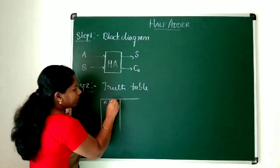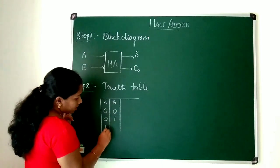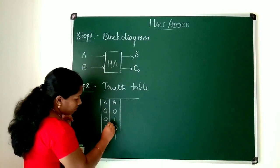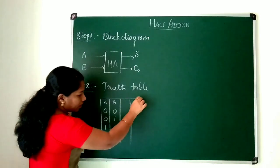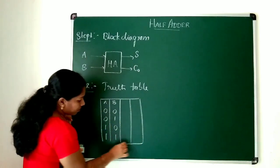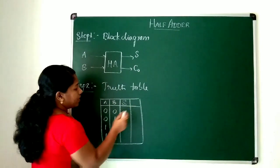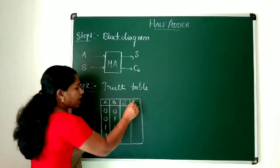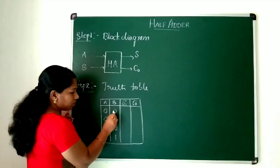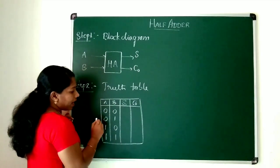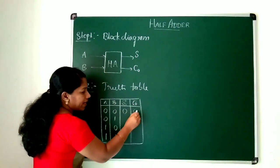The inputs A and B take values: 0,0 then 0,1 then 1,0 and 1,1. For each, I need to get the sum and carry by adding A and B. When A=0 and B=0, 0 plus 0 gives sum=0 and carry=0.